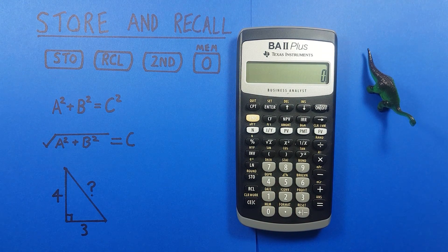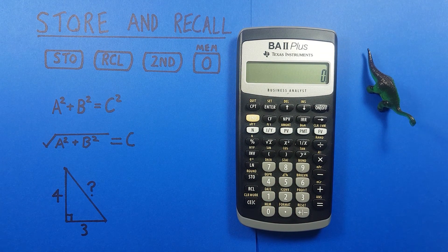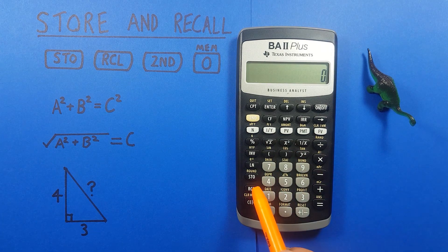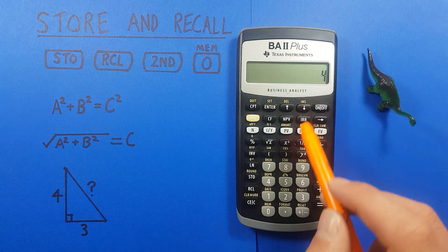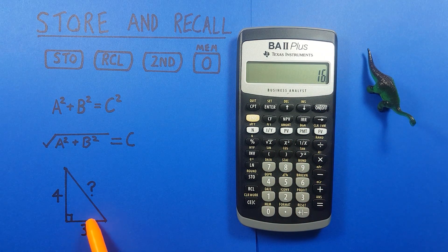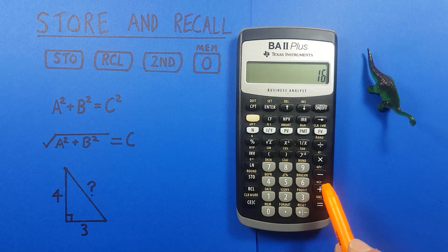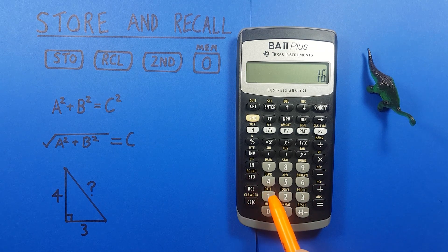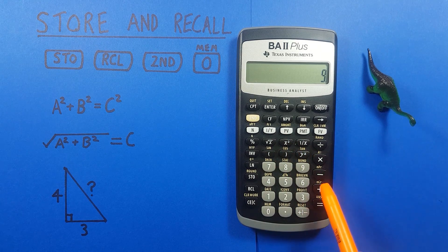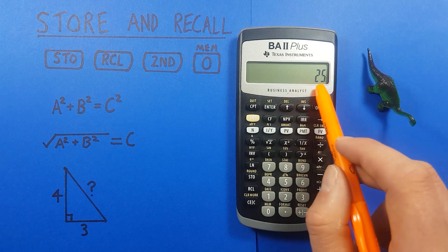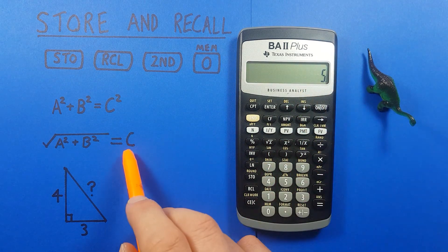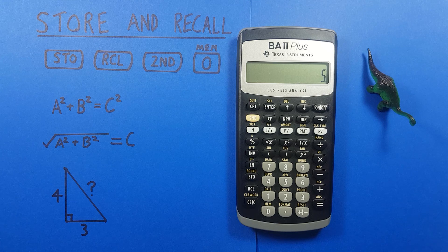Now we can just enter this in as a formula. So, if we go a squared. Which we can get by recalling 0, which is our 4. Squared. Plus b squared. Which was recall our number 1. Squared. Adding them together. And then square rooting the whole thing. We see we get a result of 5. Which is our c. And solves our triangle for us.